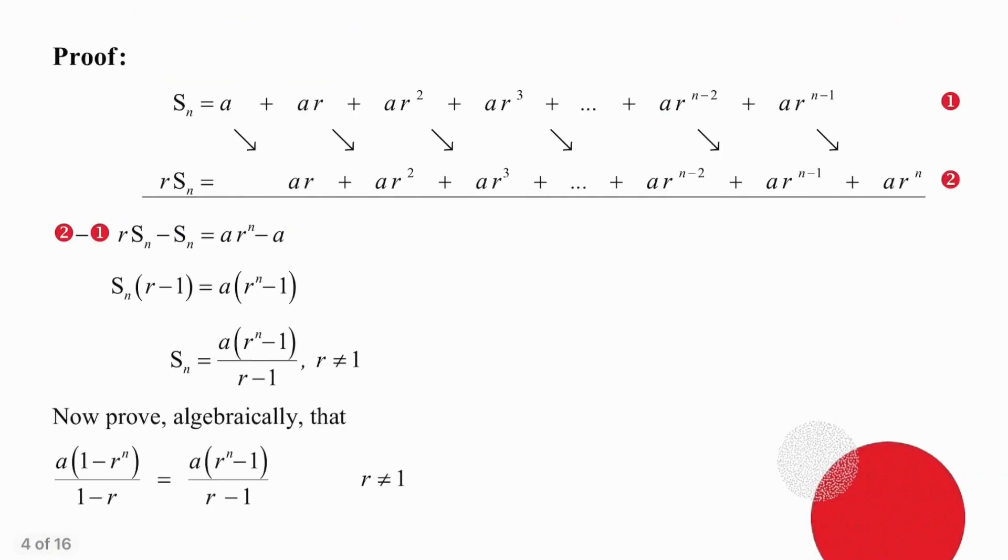Alright, let's see how you did. Step 1 is to expand the series. So you simply write out Sn, and you write out the first few terms. It doesn't matter whether you write out 3 or 4, and at least the last two.